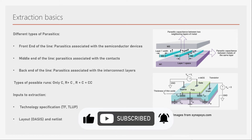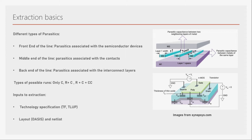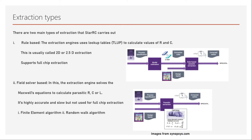OASIS is a compressed form of GDS commonly used in design. A netlist is also needed in some cases to verify that LVS is clean — to ensure no mismatches between the layout and schematic before proceeding.